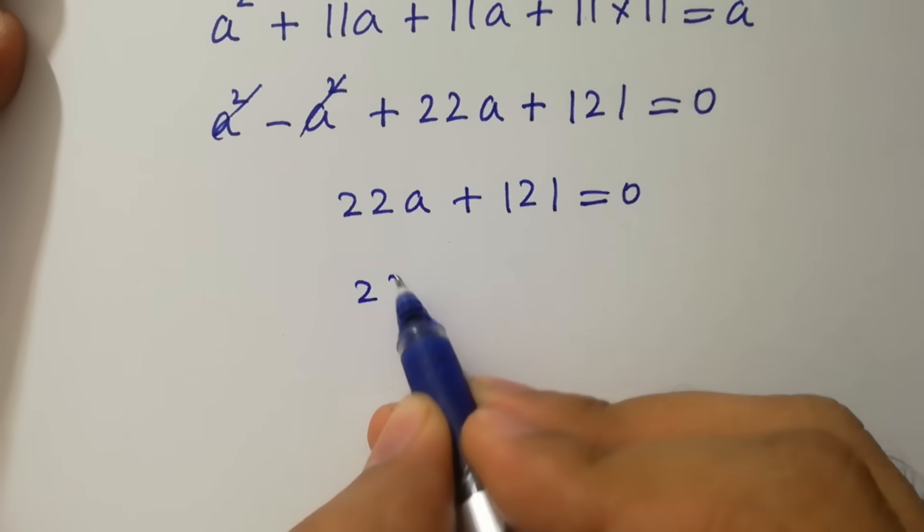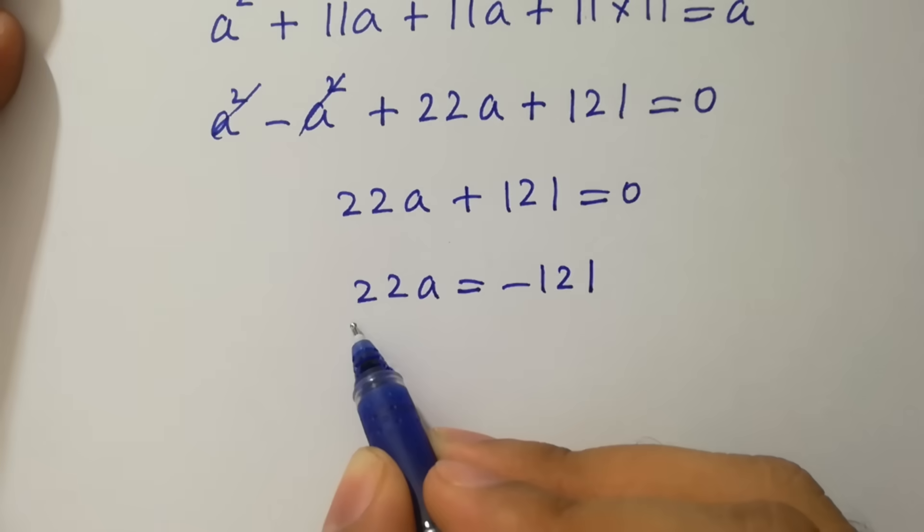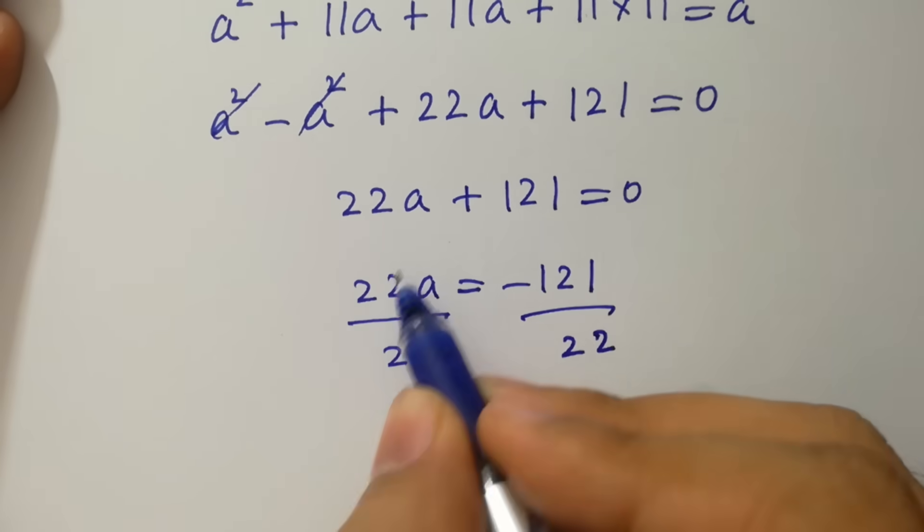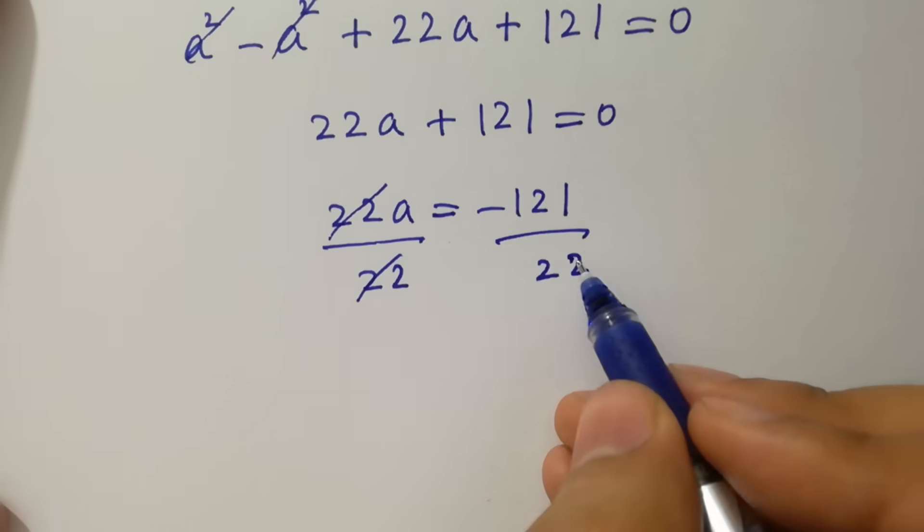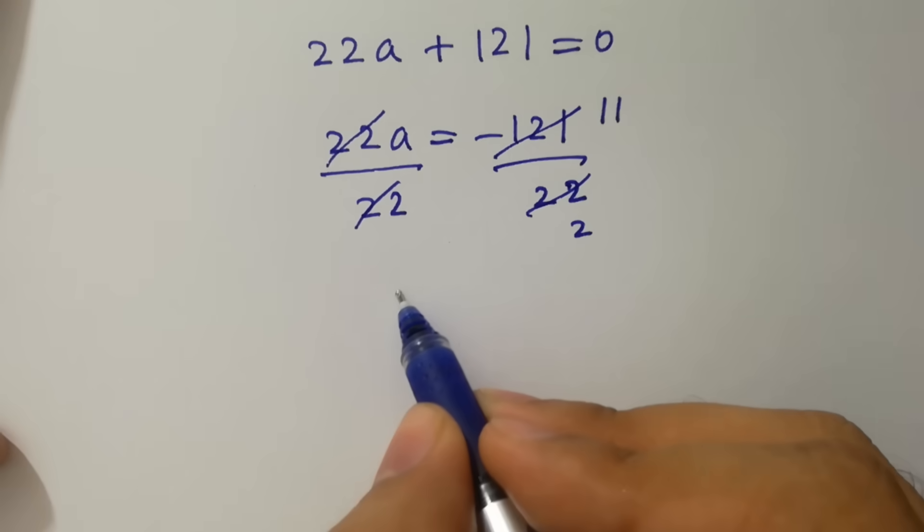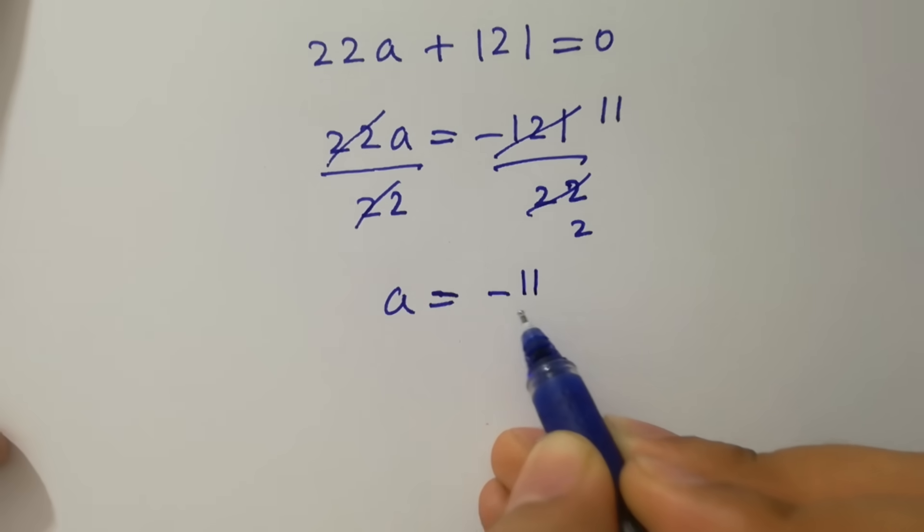22a equal to minus 121. To find a divide by 22 on both sides, 22 cancels. 11 times 2 is 22, 11 times 11 is 121 equal to minus 11 over 2.